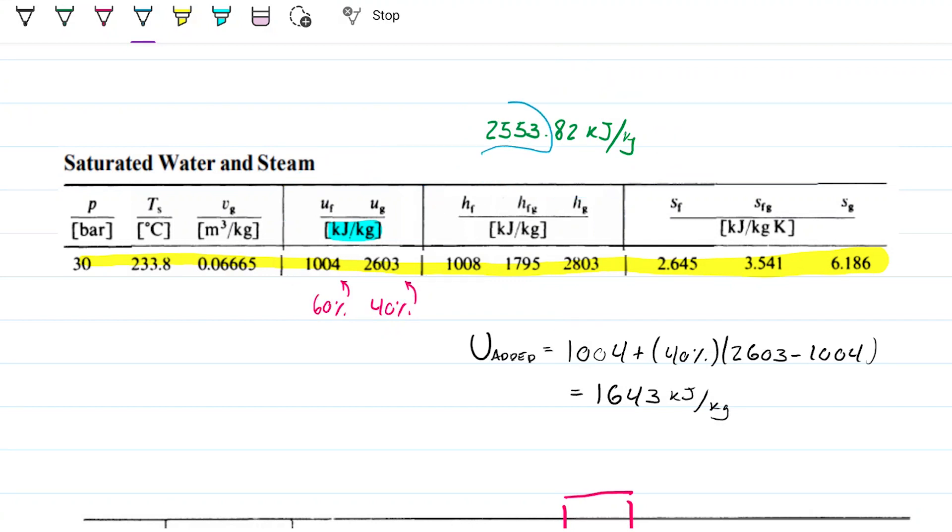If 2553 is smaller than 2603, and indeed it is, then we know this is not superheated. We kind of eliminated that already, but we can be sure here. Now the next question is, is this smaller than the liquid? So is it smaller than 1004? It's not, right? 2500 is greater than 1000. So therefore,